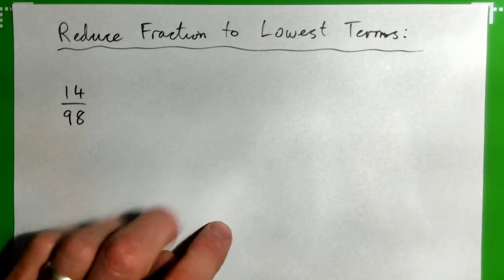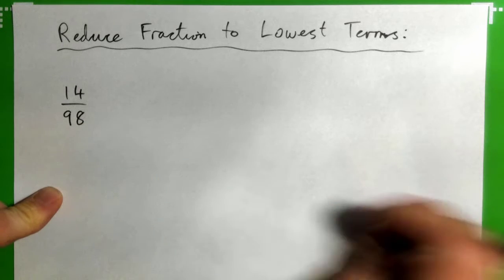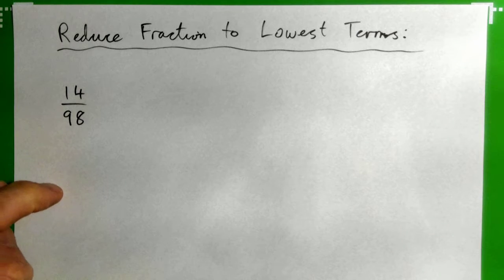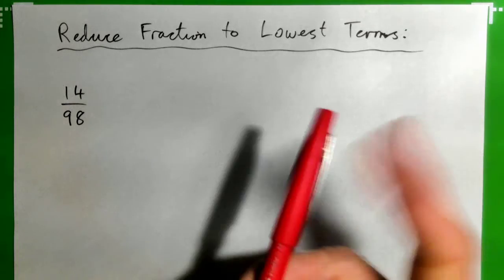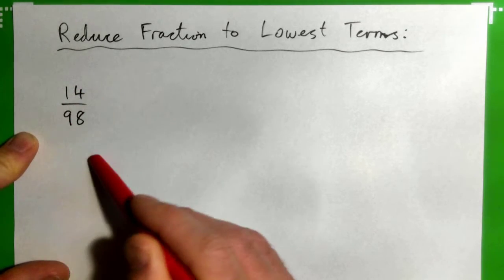All right, so we're going to reduce this fraction to lowest terms, 14 over 98. The trick is knowing your times tables - what type of number can go into both the top and the bottom of this fraction?